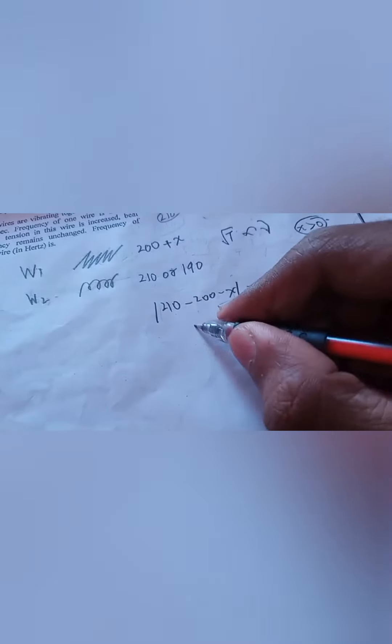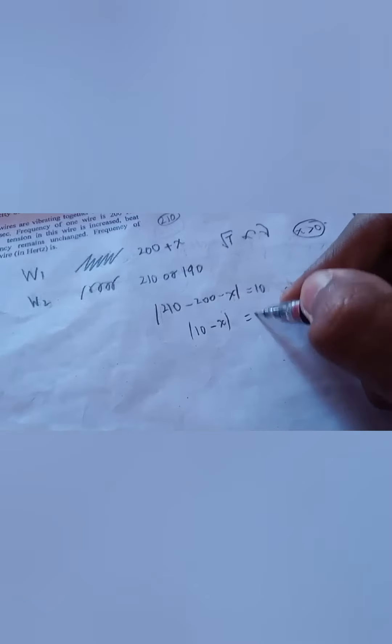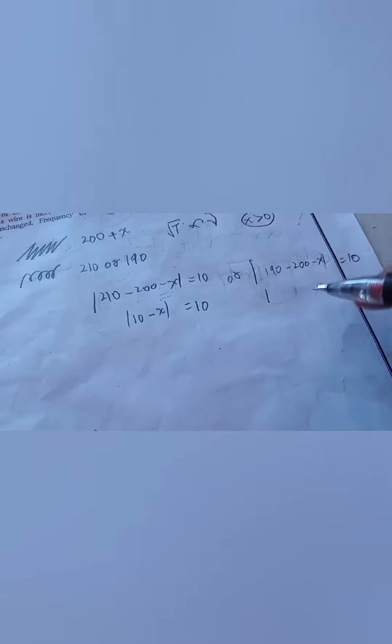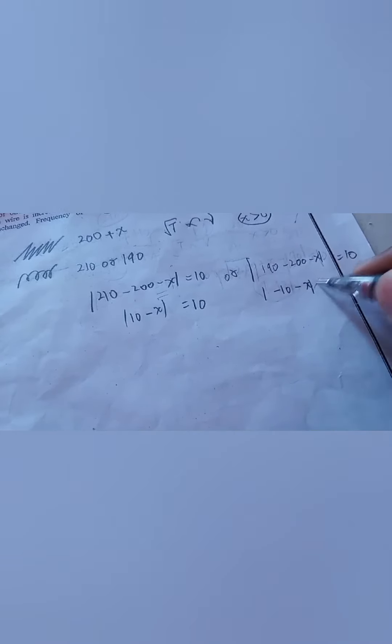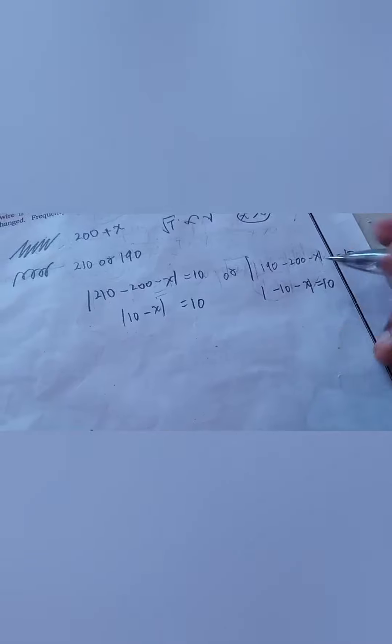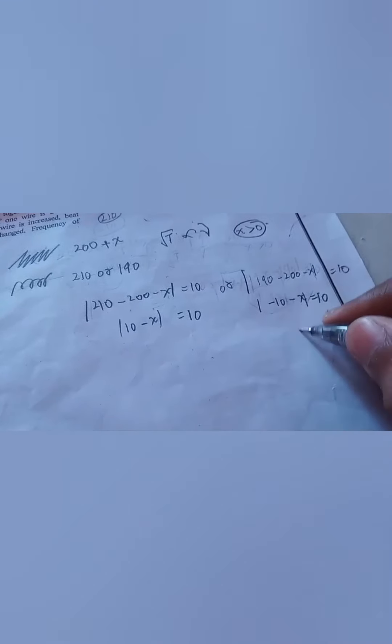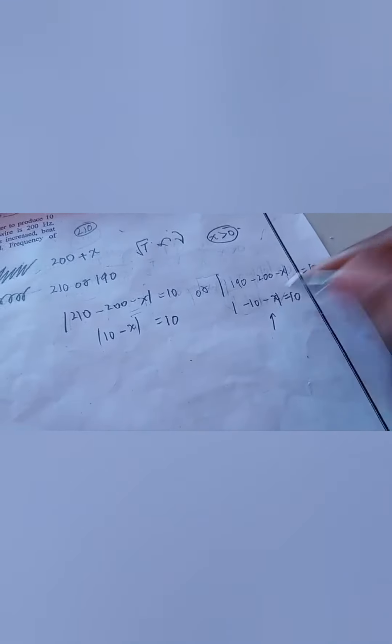Here we have 10 minus x equal to 10, and here we have negative 10 minus x equal to 10. So basically if you see this one, you know x is greater than 0.